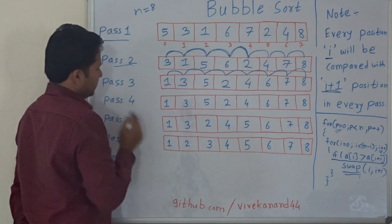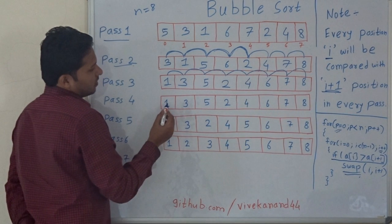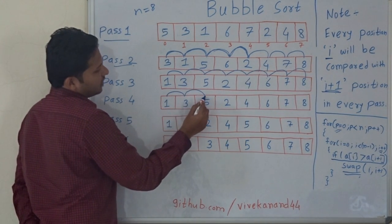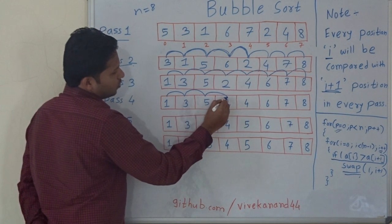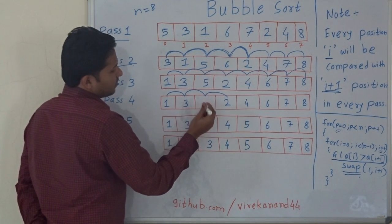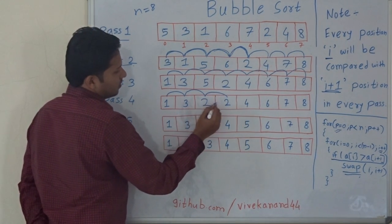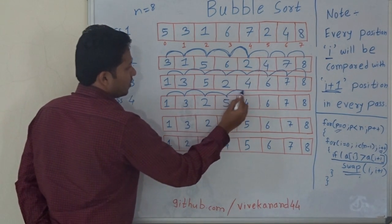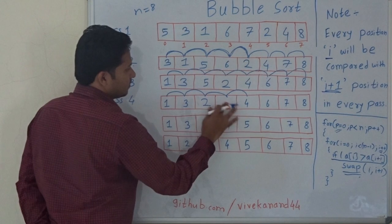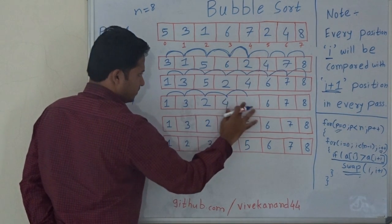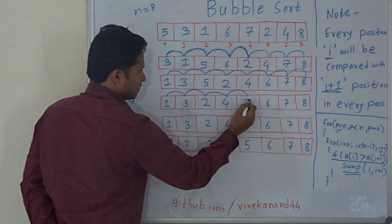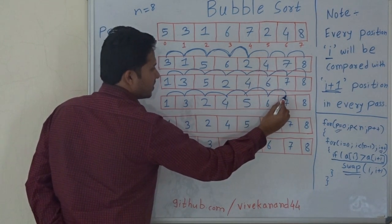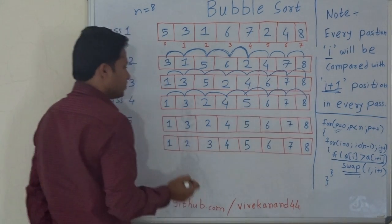Now let's go to Pass 4. Compare 1 with 3 — no swap. 3 with 5 — no swap. 5 with 2 — yes, swap needed. 5 with 4 — yes, swap needed. 5 with 6 — no swap. 6 with 7 — no swap. 7 with 8 — no swap.